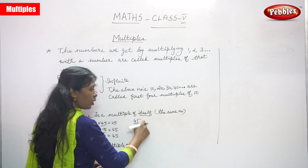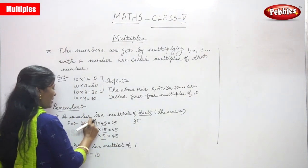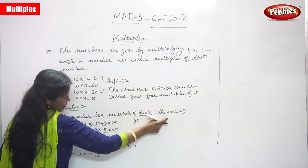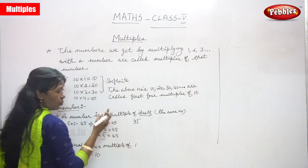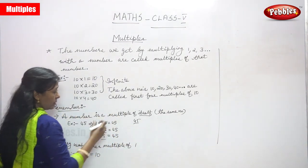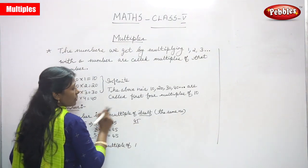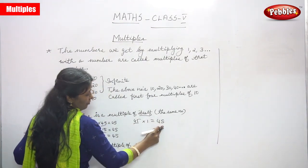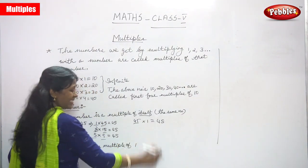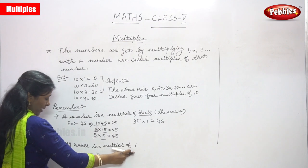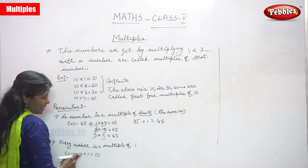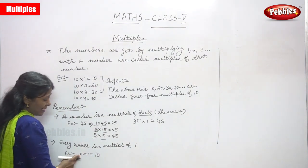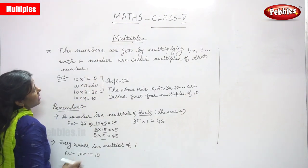So 45 is a multiple of the same number — 45 into 1 gives you 45. That is what the statement means: a number is a multiple of itself. Also, 1 is generally a multiple of all numbers. Every number is a multiple of 1 — 10 into 1 gives you 10, so 10 is a multiple of 1.